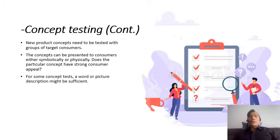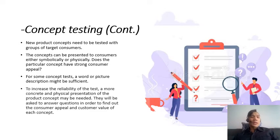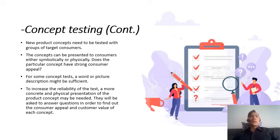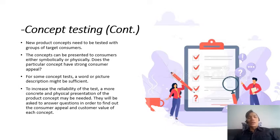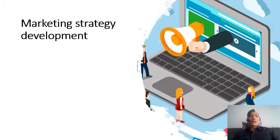Concept tests can use words, pictures, or descriptions that are sufficient enough — we don't even have to prototype. To increase reliability, a more concrete physical representation may be needed, prototyping the concept further. Consumers are then asked questions to find out the appeal of that concept.